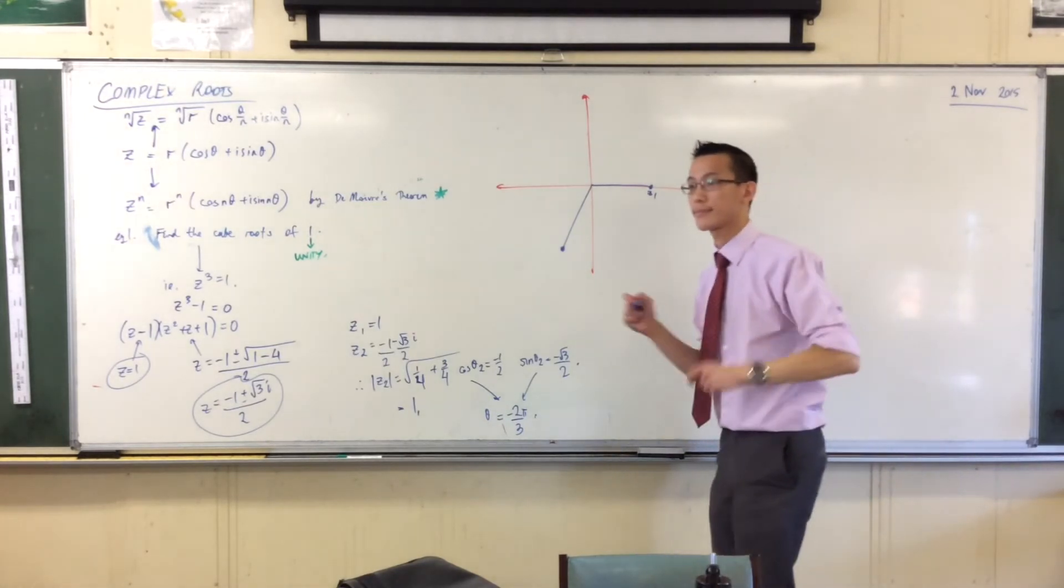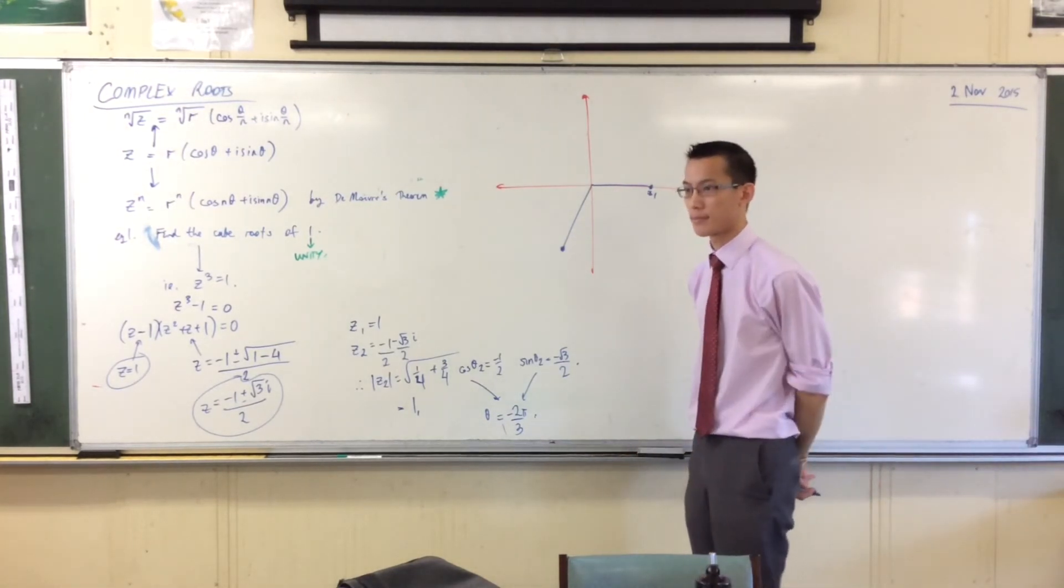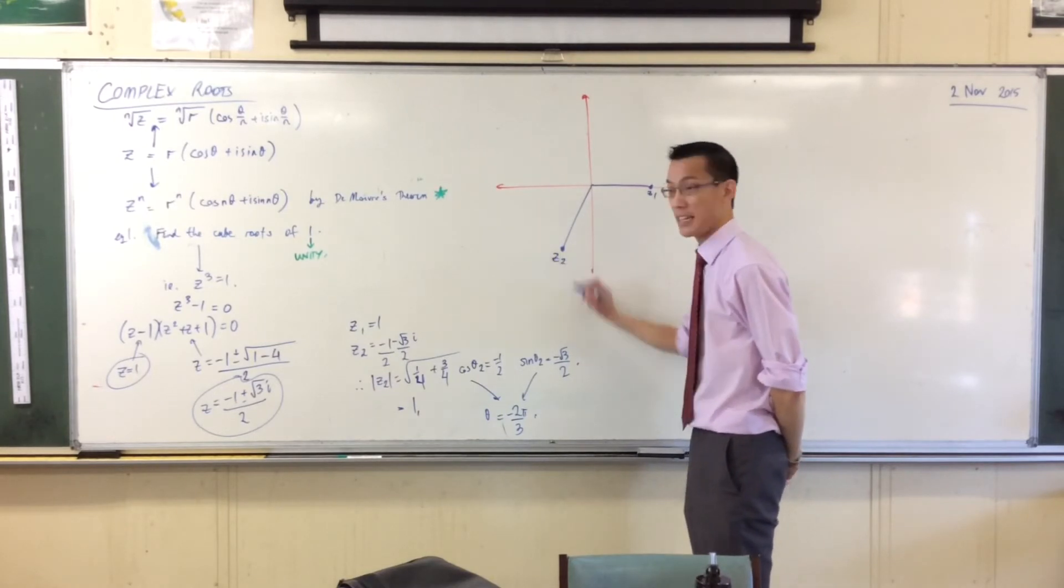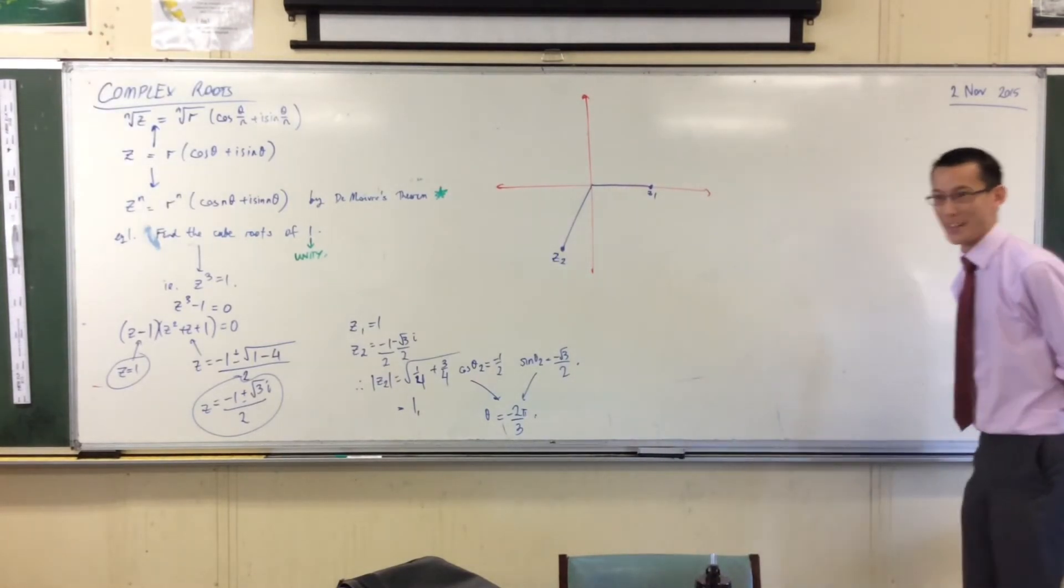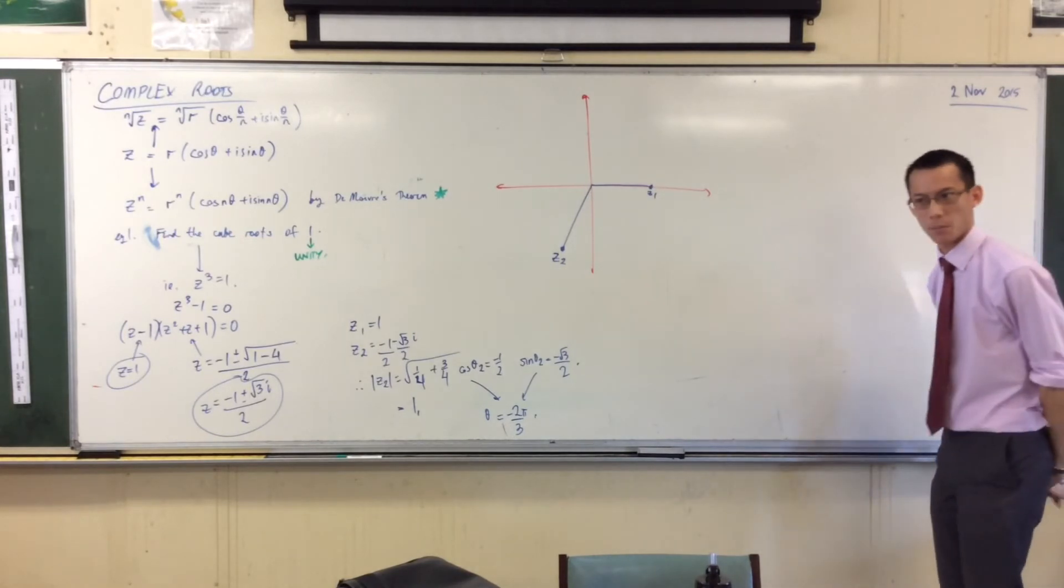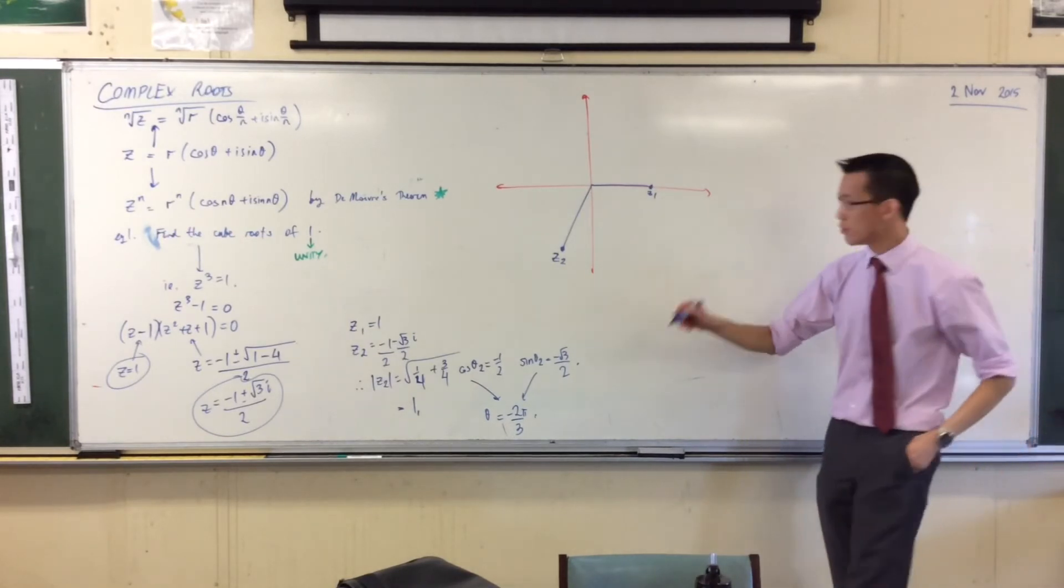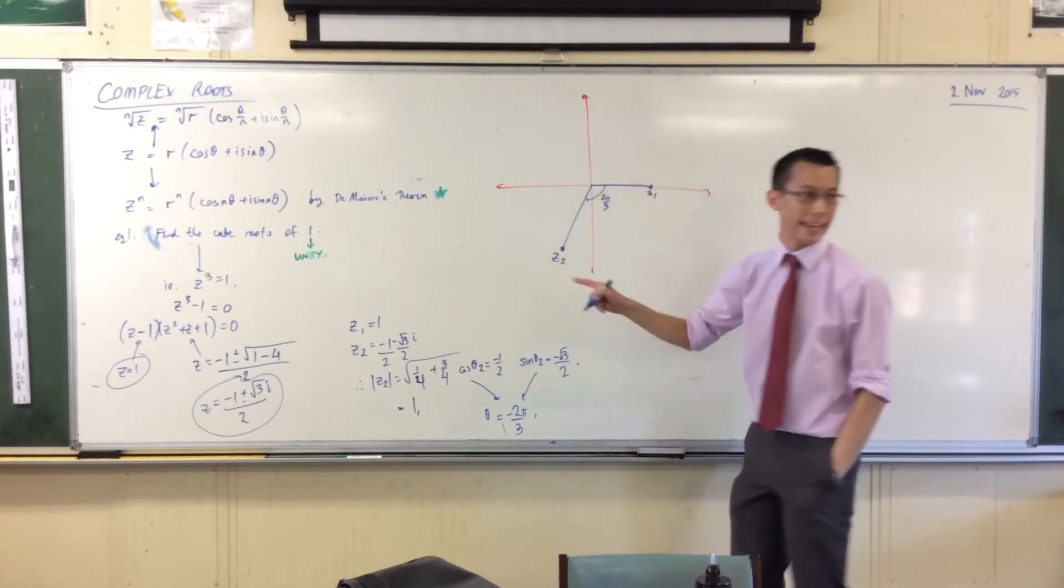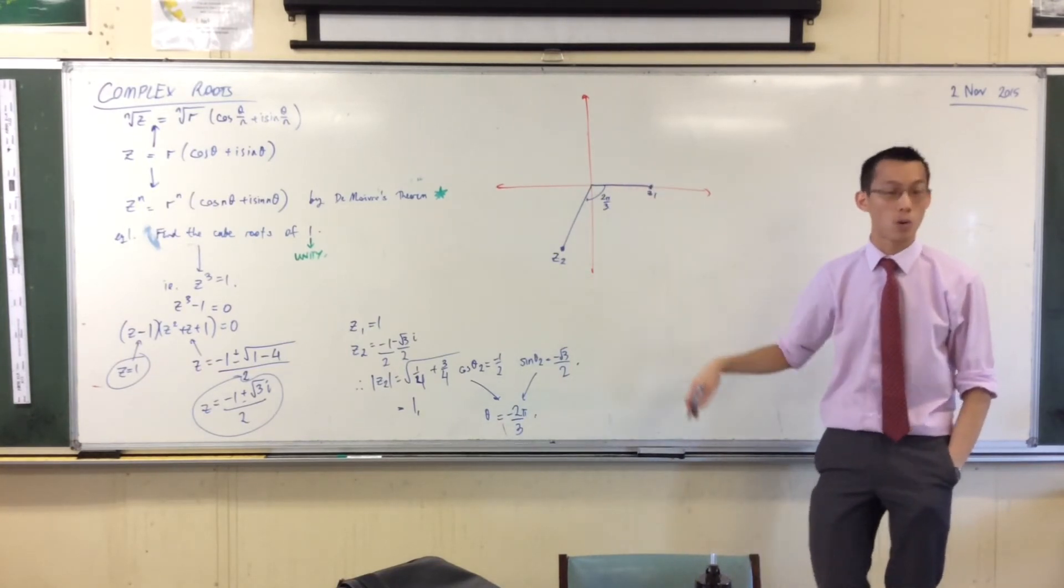Will you be going on to the conjugate? A little bit, yes. You're going to see it pretty immediately, like in about 2 minutes. So there's Z2, and there's my angle there, 2 pi on 3, but it's negative. That's why I've gone clockwise.